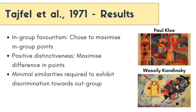This experiment goes to show and suggests that we need only minimal similarities to form an in-group and our membership with that group. It also shows that we can exhibit discrimination towards an out-group and try to establish positive distinctiveness even at the cost of our own group, based on minimal characteristics that tie that group together.